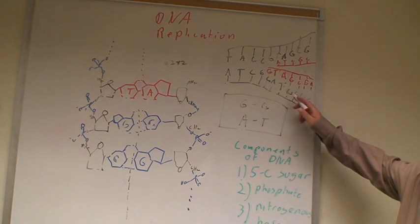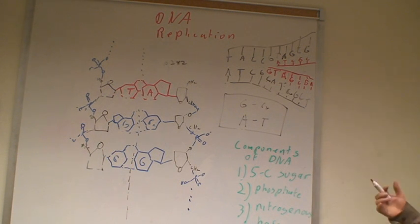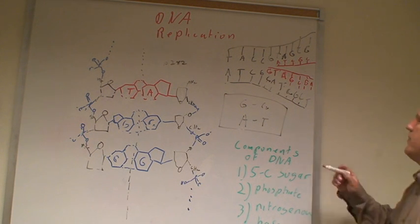So once those two things happen, an enzyme called—anyone remember from the reading?—right, DNA polymerase comes and reads each strand and adds base by base to the opposite strand that's forming along the replication.